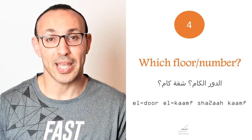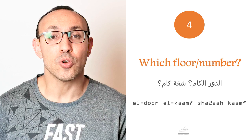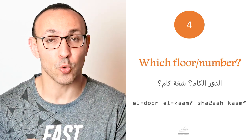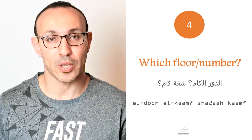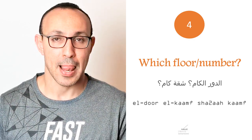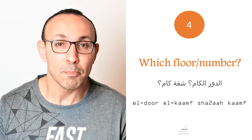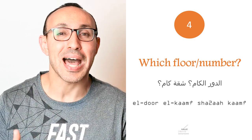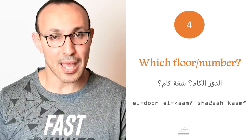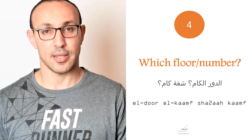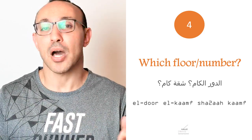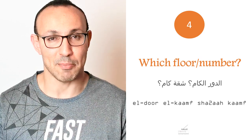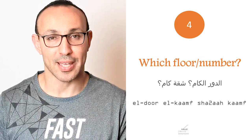Which floor? In Egyptian Arabic: الدور الكام. الدور means 'a floor' and الكام means 'which number.' If you want to ask about the number of the flat itself, you say شقة كام or شقة رقم كام — رقم means 'number.' You can also drop رقم and just say الشقة كام.